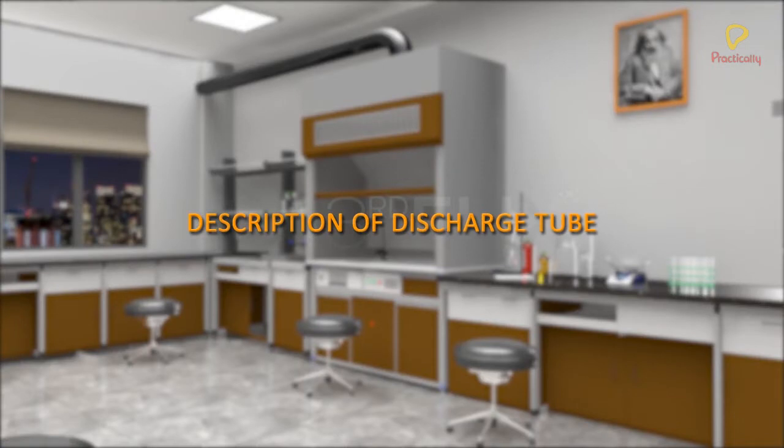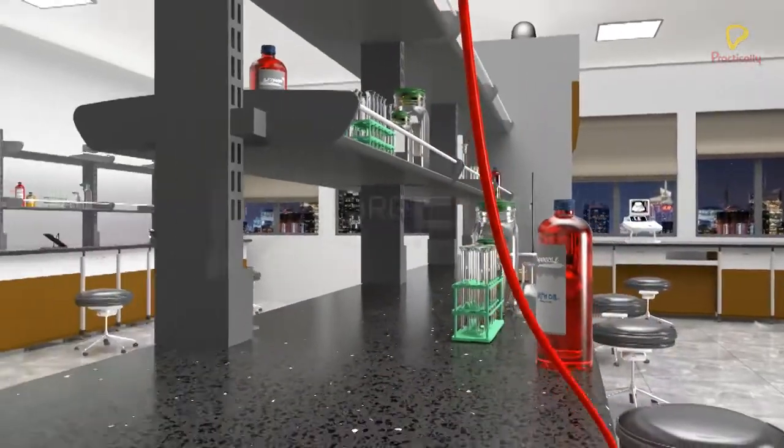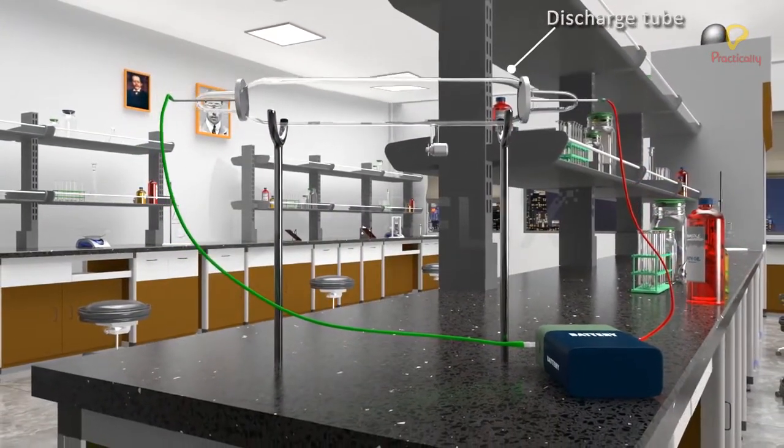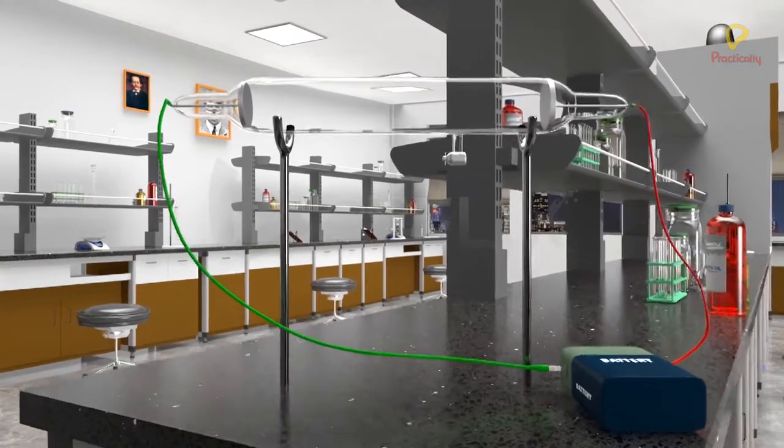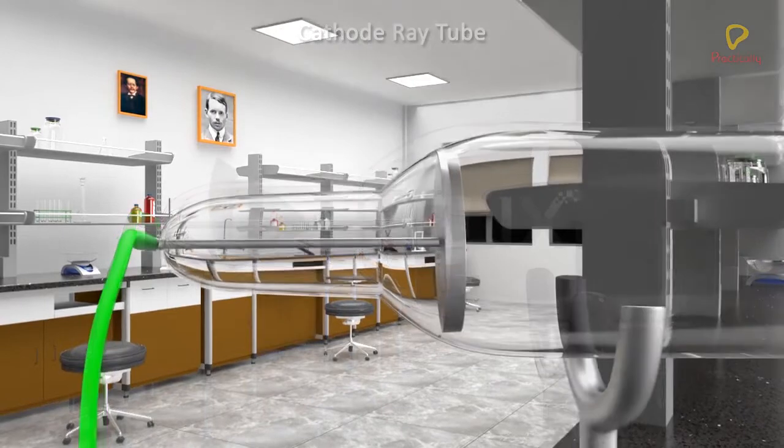Cathode rays were produced in a discharge tube, hence a discharge tube is generally referred to as the cathode ray tube. The cathode ray tube is a partially evacuated glass tube with the cathode and anode placed at the two ends of the tube.